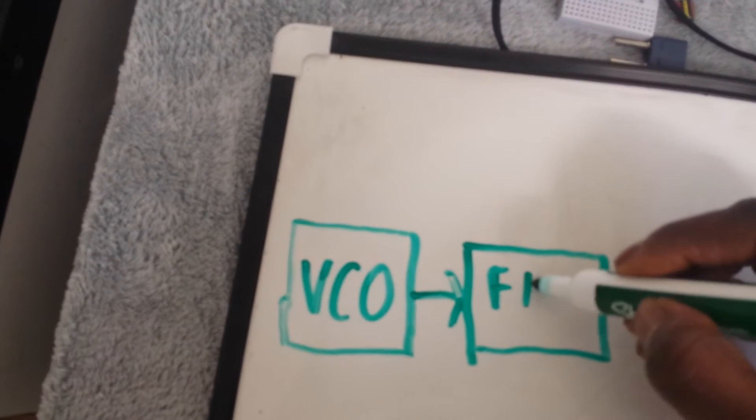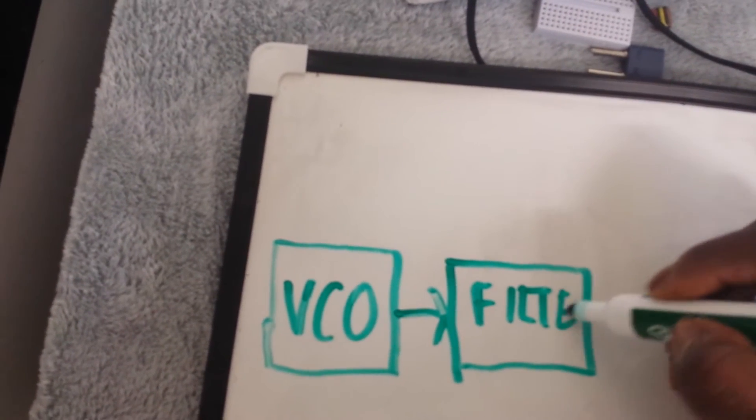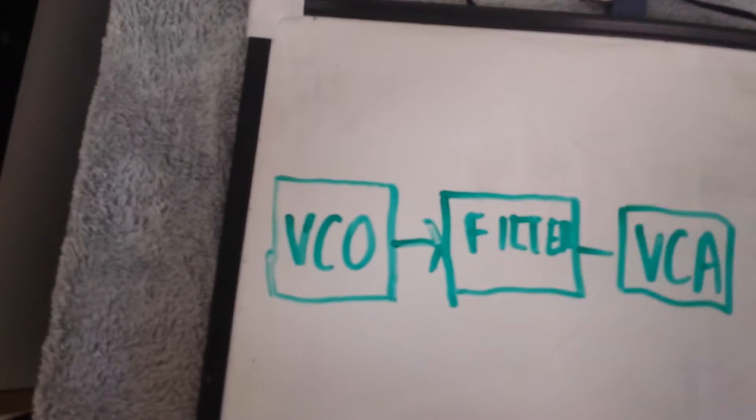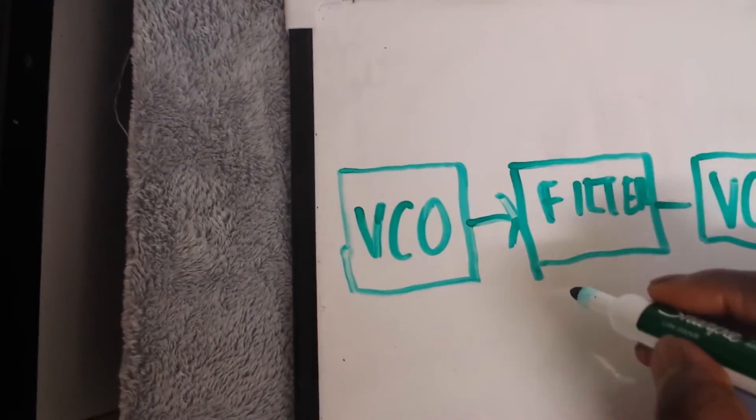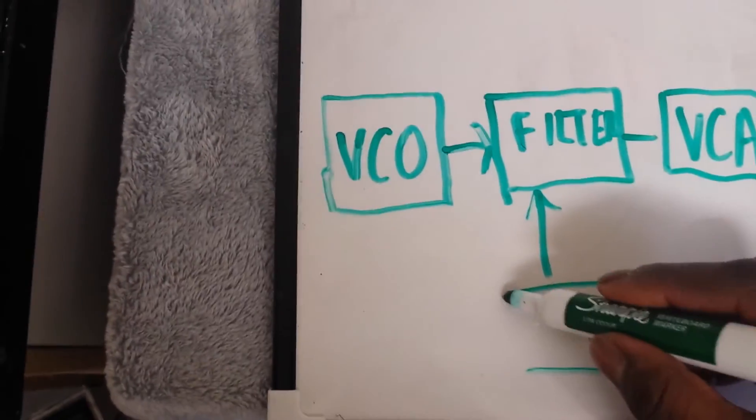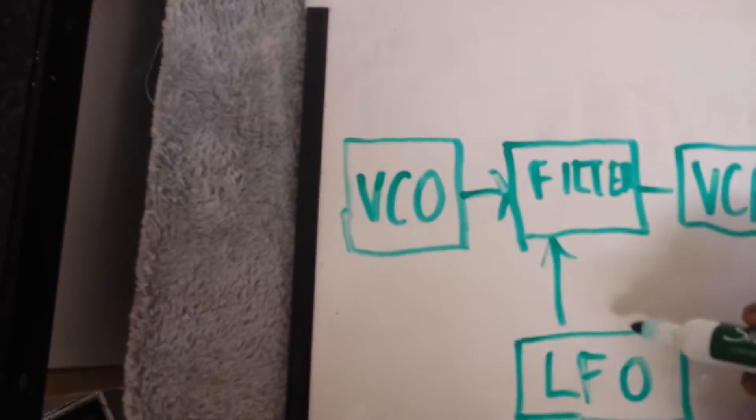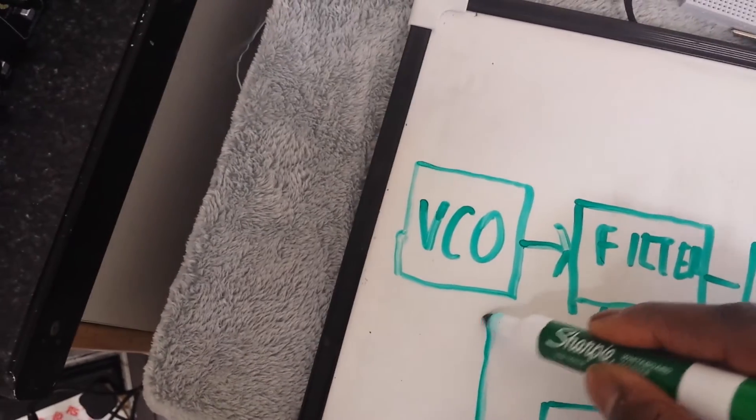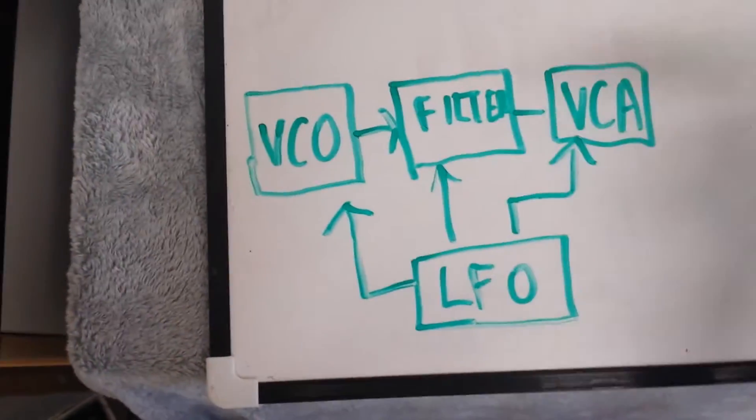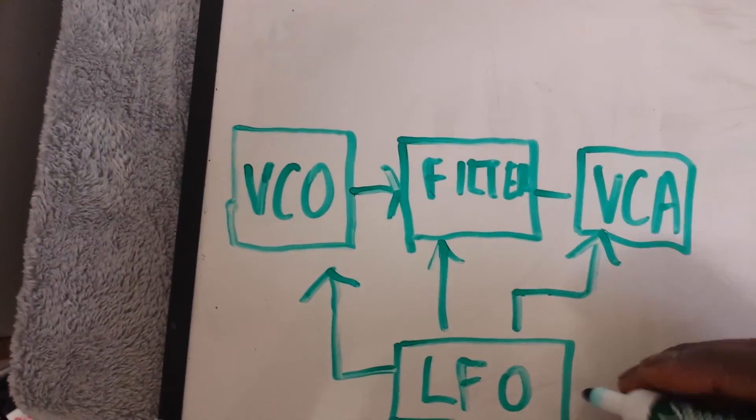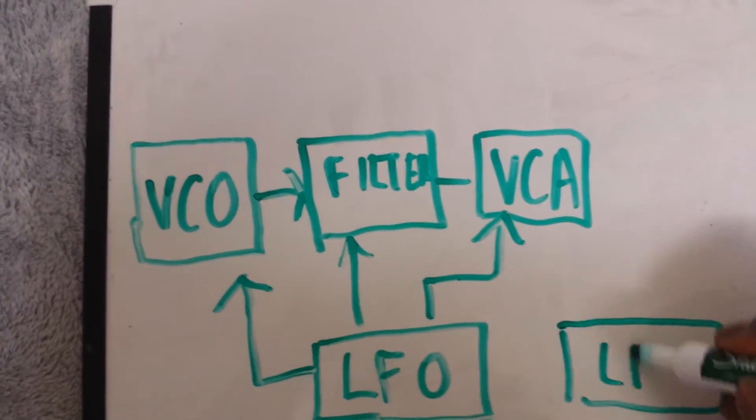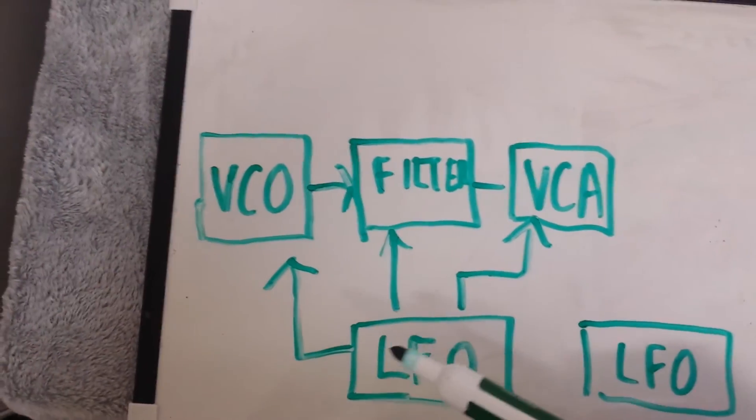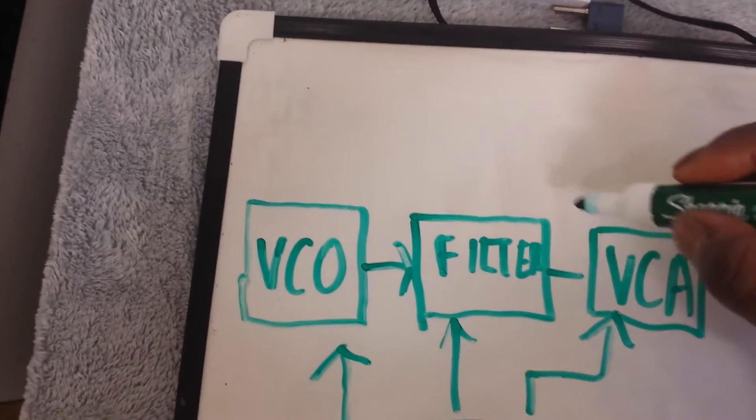So okay we're going to have a voltage controlled oscillator and I'm going to have a filter and then I want to go into an amplifier, a voltage controlled amplifier also known as the VCA. So we have a voltage controlled oscillator into the filter and then we can have like say we're going to have a modulator, we can have an LFO.